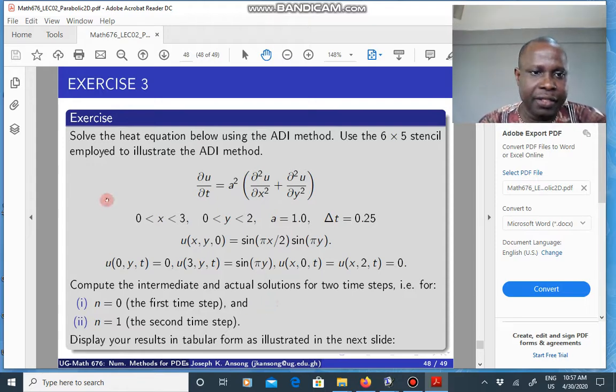So this is an exercise that I will ask you to do. You have the heat equation in 2D. A is just one. I want you to set delta t to be 0.25. This is a rectangular grid, x between 0 and 3, y lies between 0 and 2. And then the initial condition is given by this function here.